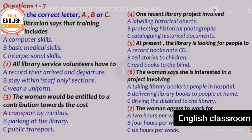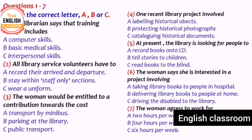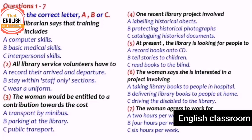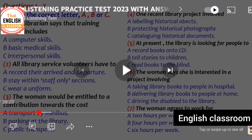The librarian confirms: 'That would have been one of ours — it's one of our most popular services.' People who wouldn't normally go to the library borrow books when the trolley comes around the ward. The woman says she'd definitely be interested in that. So the answer to question six is A — taking library books to people in hospital.